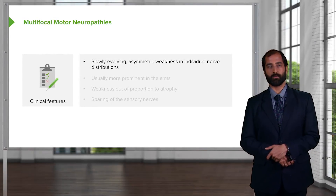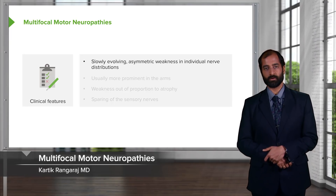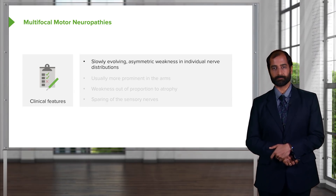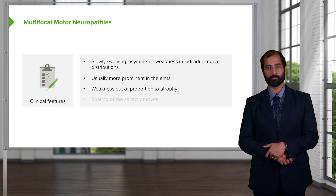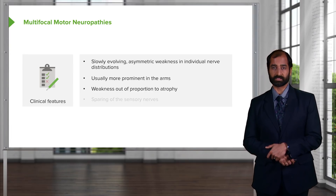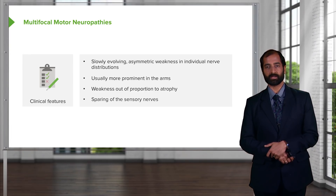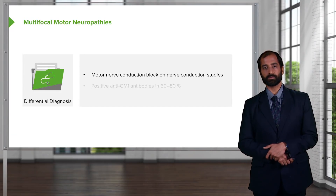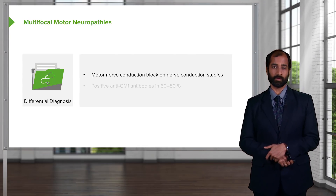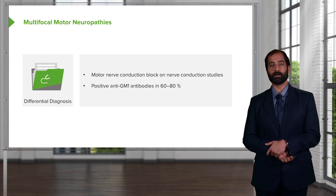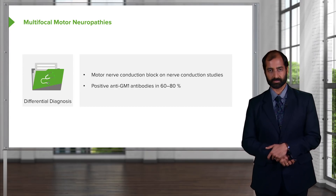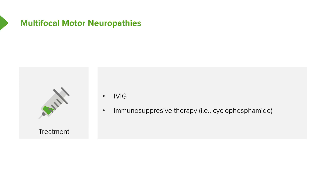Multifocal motor neuropathy: clinical features include slowly evolving, asymmetric weakness in individual nerve distributions, usually more prominent in the arms. Weakness is out of proportion to atrophy, indicating a nerve issue. There is sparing of sensory nerves — it is strictly a motor neuropathy. Diagnosis: motor nerve conduction block on nerve conduction study. Positive anti-GM1 antibody in approximately 60 to 80% of patients. Management is IVIG and perhaps immunosuppressive therapy.